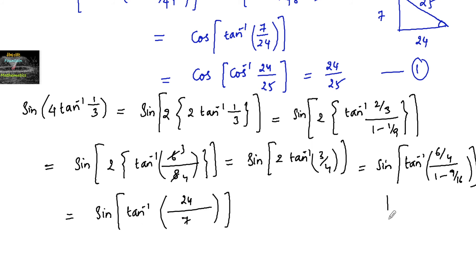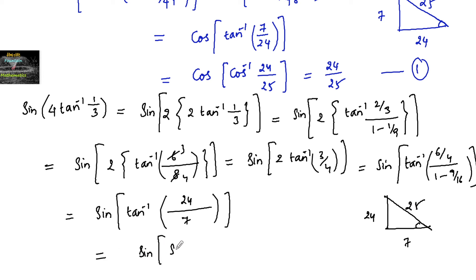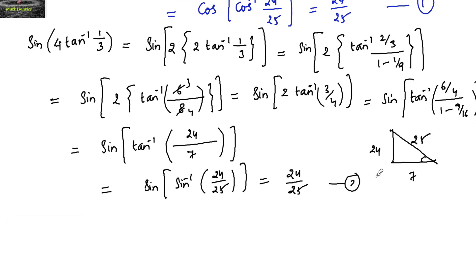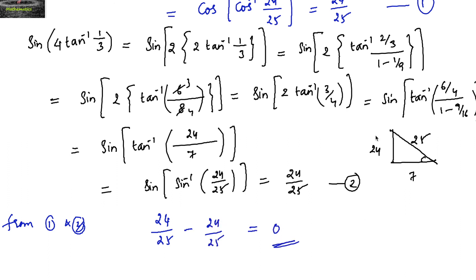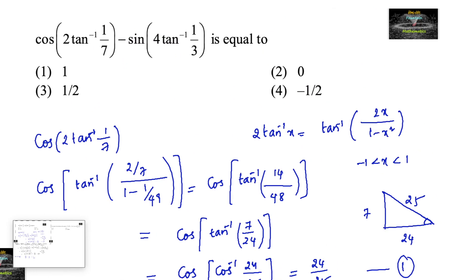Converting tan⁻¹(24/7) to sine: opposite = 24, adjacent = 7, and since 7, 24, 25 are Pythagorean triplets, hypotenuse = 25. So sin = opposite/hypotenuse = 24/25, giving sin(sin⁻¹(24/25)) = 24/25. Mark this as result 2. From results 1 and 2: 24/25 − 24/25 = 0. The answer is option B, 0.